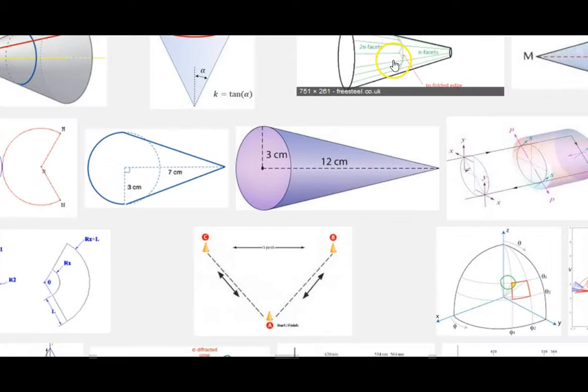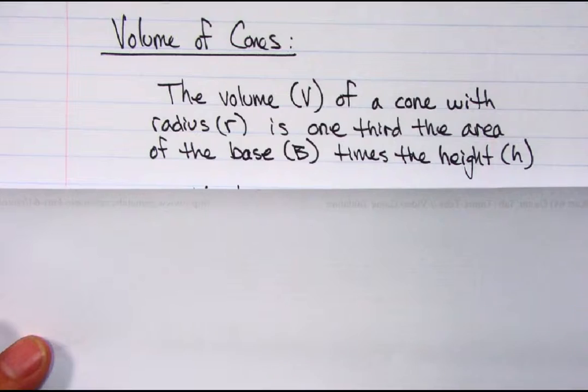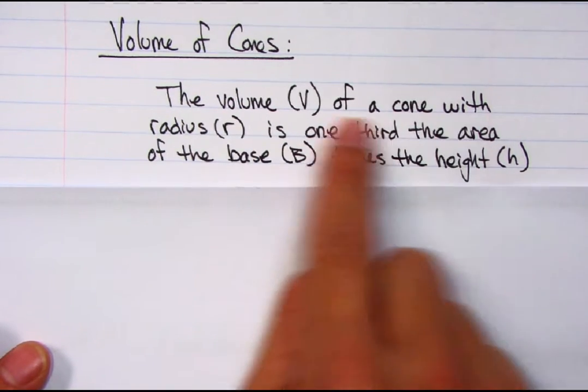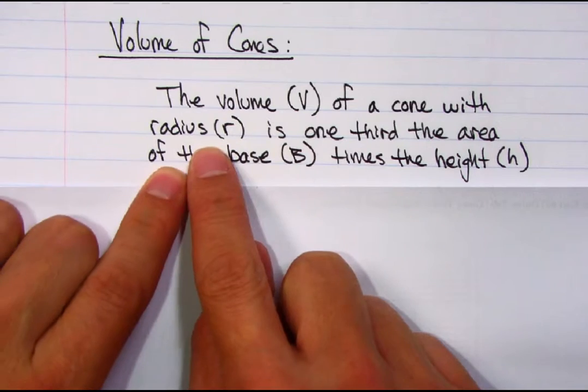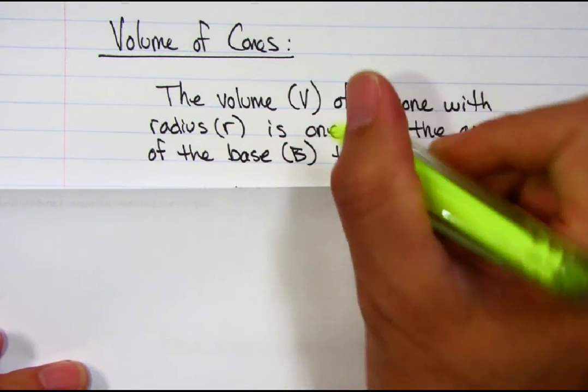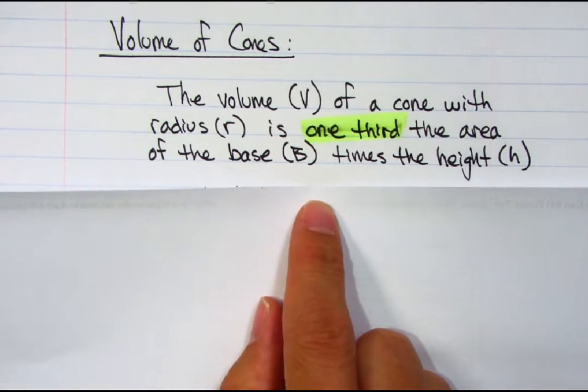Cones that have the circle bottom there. So the volume of a cone, what fills up a cone, we figure it out by taking the radius R and noting that it's one-third the area of the base times the height.